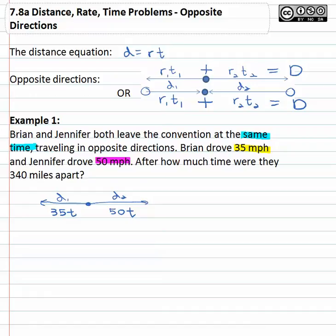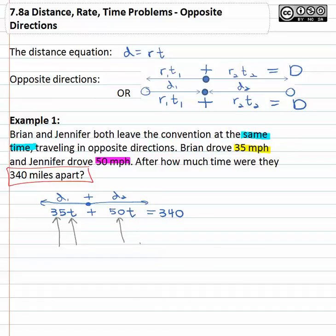We're also told that at the end they are three hundred forty miles apart. This means the total distance — adding the two distances together — equals three hundred forty miles. We found this by taking the rate of the first times the time of the first, plus the rate of the second times the time of the second, which added together equal the total distance.